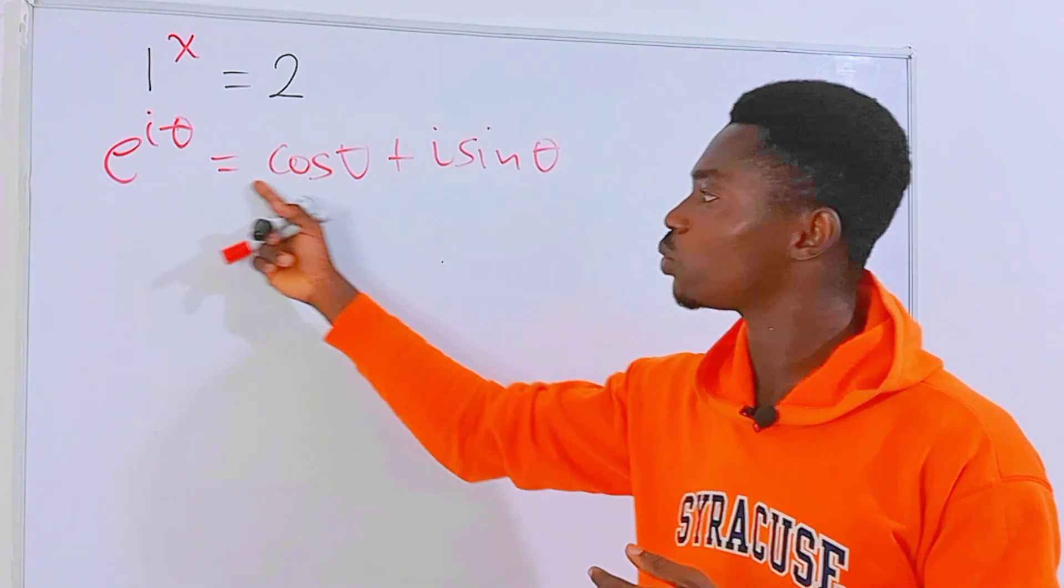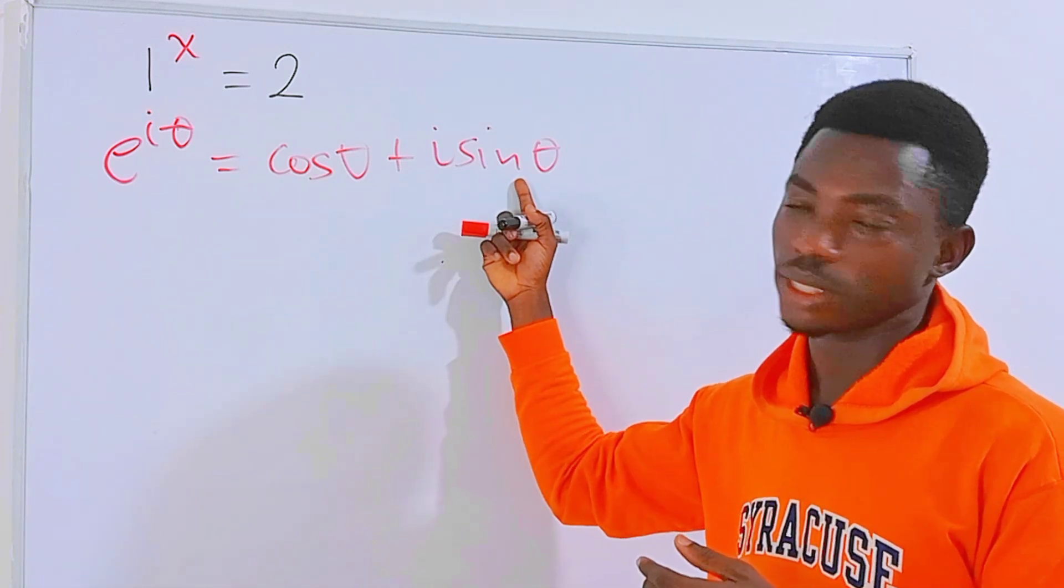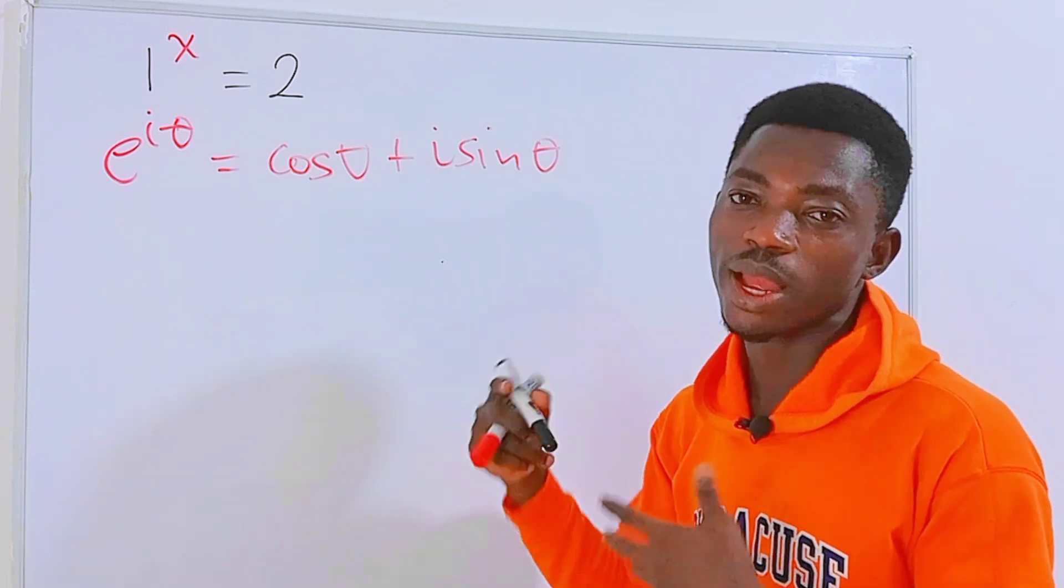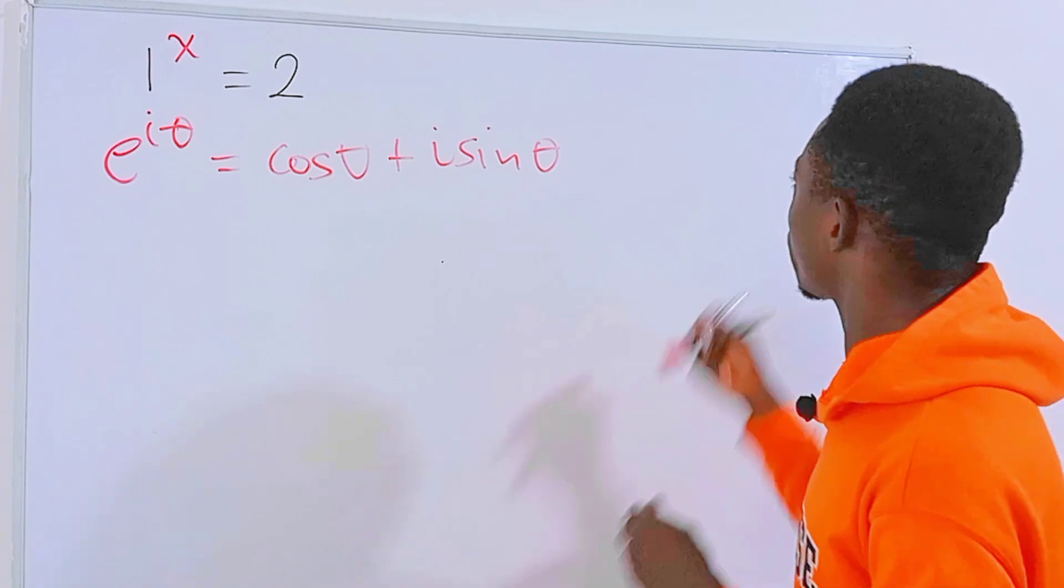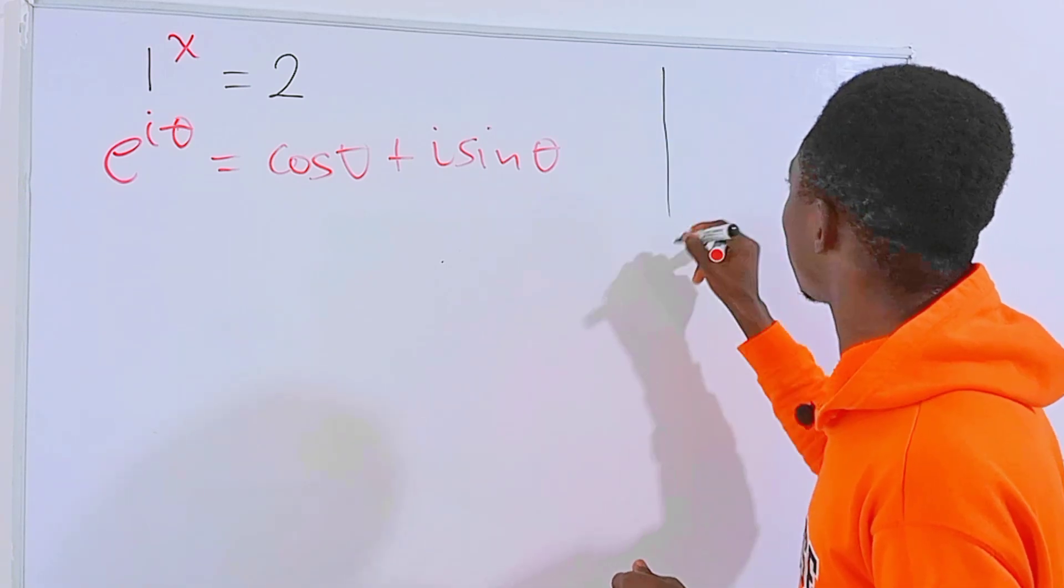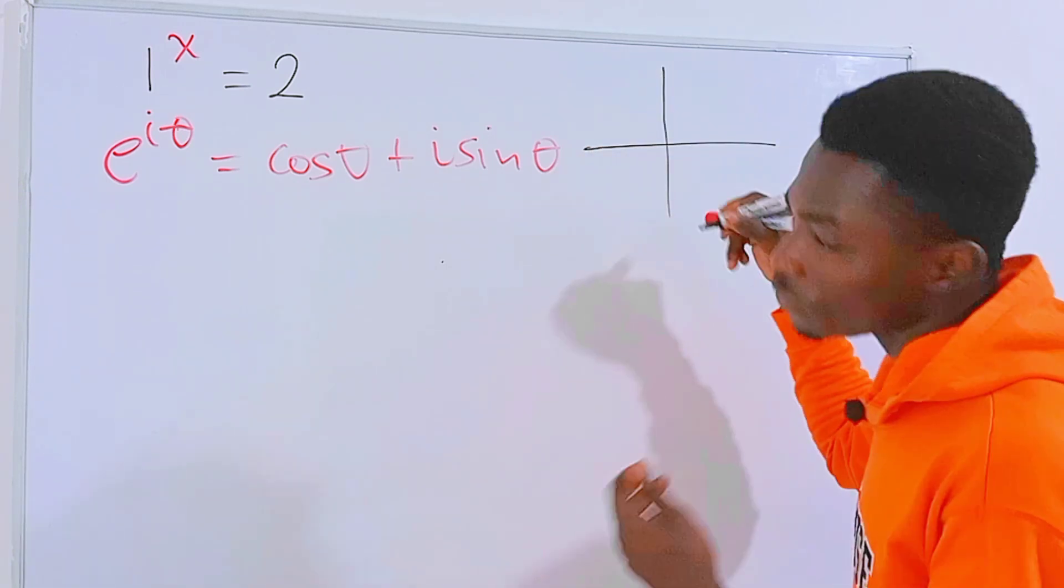Now what do we need in order for us to use this Euler's equation? We need theta, and we can find theta on the Cartesian plane using a unit circle. So let's say we have a Cartesian plane right here.